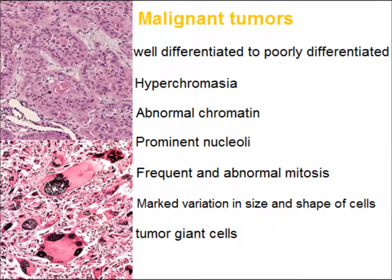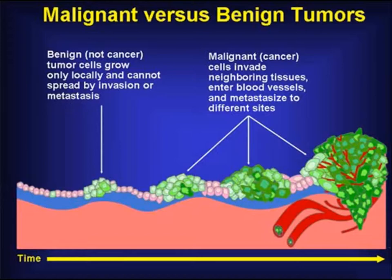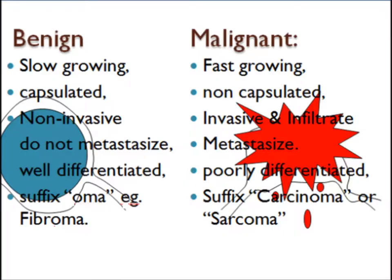Metastasis is the development of secondary implants discontinuous with the primary tumor in remote tissue. Primary malignant cells invade the vessels and lymph channels and regrow at distant sites. In summary: benign tumors are localized, non-invasive, and well circumscribed; malignant tumors are invasive, they metastasize, and infiltrate vessels and lymphatics. Benign tumors are slow growing and innocent; malignant tumors are fast growing and cause death of the patient.